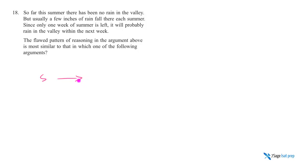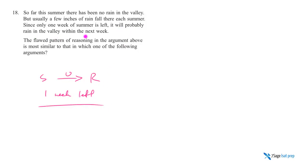So far this summer there's been no rain in the valley, but usually a few inches of rainfall each summer. I'll use 'U' for usually. There are about 12 weeks in a summer, and 11 weeks have passed, so only one week is left remaining. We conclude that it will probably rain in the valley within the next week — likely rain in the last week.